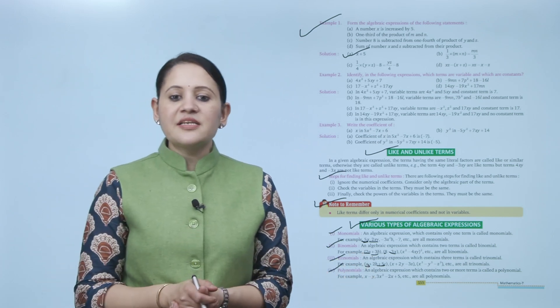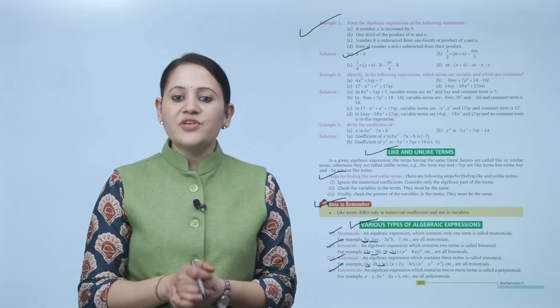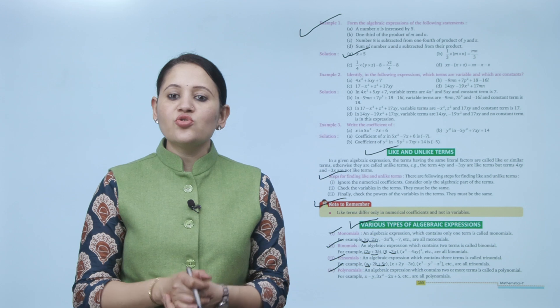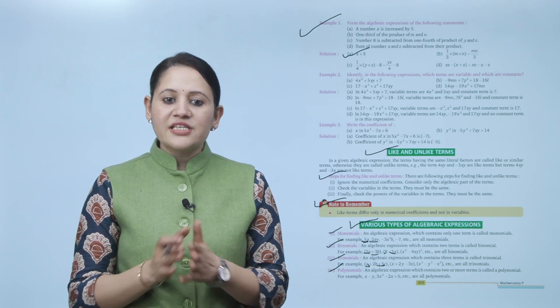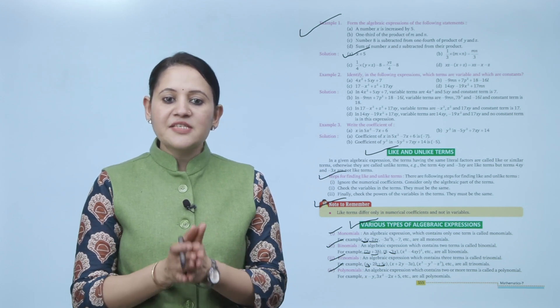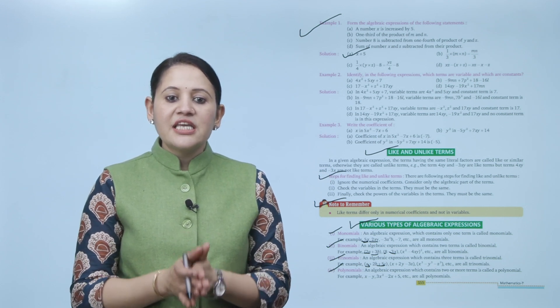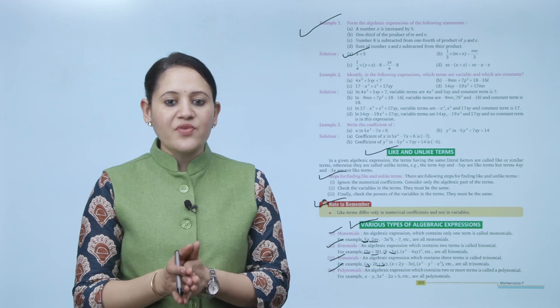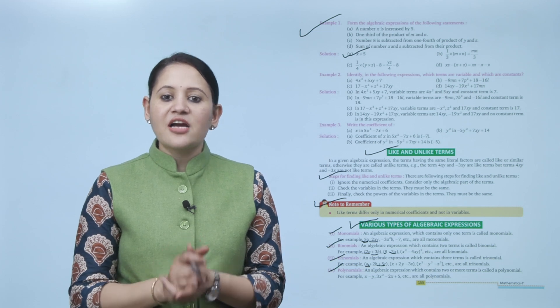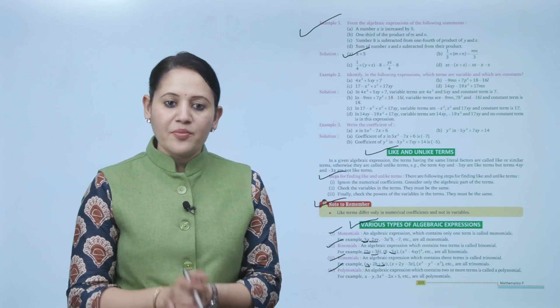Next is polynomial. An algebraic expression which contains two or more terms is called a polynomial. For example, x − y and 3x² − 2x + 5 etc. are called polynomials.